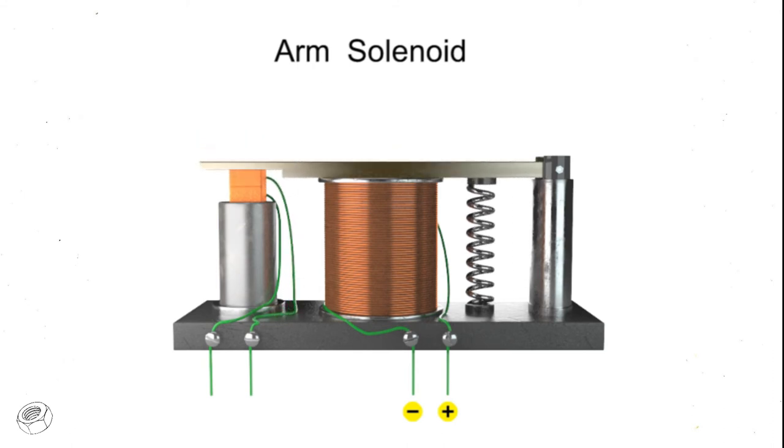Thus, the movable contact makes a connection with a fixed contact to close the switch and energize a secondary circuit.